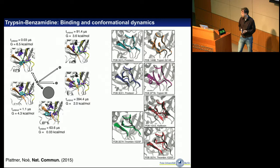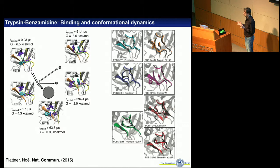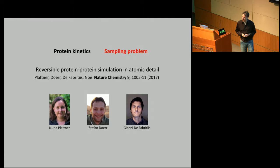There's work on trypsin-benzamidine that studies different conformations of the trypsin protein as it binds to benzamidine. These different conformations can be related to the ground states — the X-ray structures of other serine proteases, which is the protein family that trypsin is in. These are the kinds of things that MD and Markov State Models combined are good at: understanding relevant states in a protein, mechanisms switching between states, and binding and unbinding rates. Unbinding rates are tricky because they involve rare events.